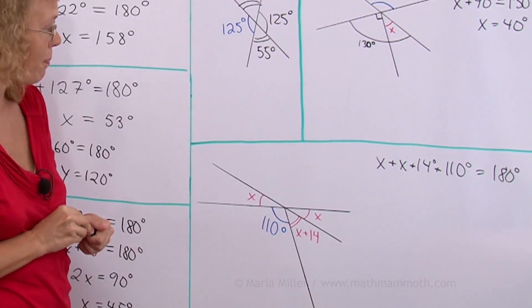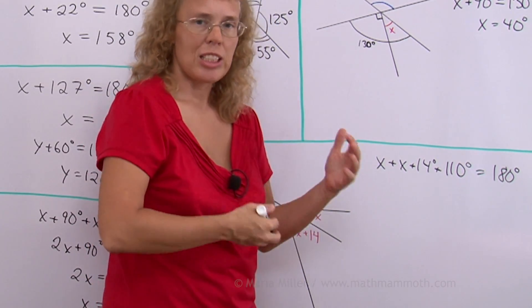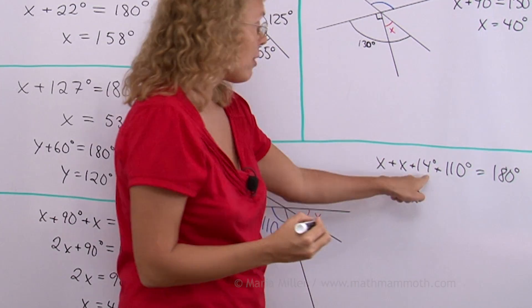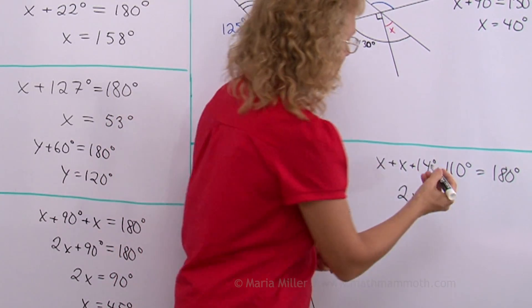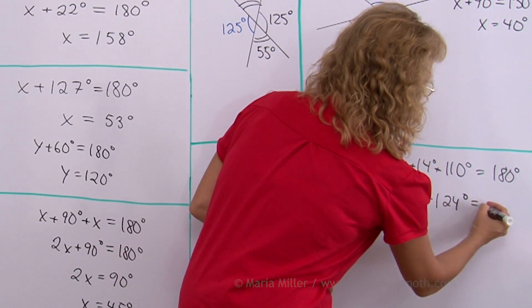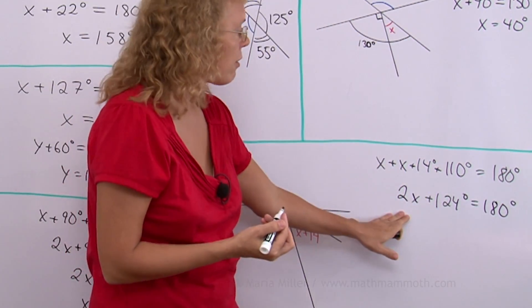And now we will solve this equation. First I will add x and x. That makes 2x. I will also add 14 and 110. That would be 124 degrees. That's just simplifying this side of the equation.